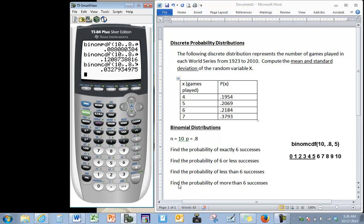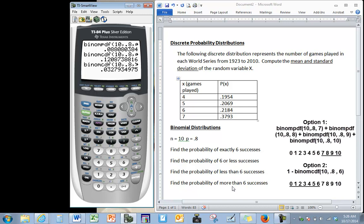And the last one, find the probability of more than six. So we don't want to include six, we want everything higher than six. So that means we're looking for seven, we're looking for eight, we're looking for nine, we're looking for ten. All of those options and we stopped at ten because our total number of trials is ten.